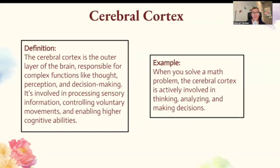Cerebral cortex. The cerebral cortex is the outer layer of the brain, responsible for complex functions like thought, perception, and decision-making. It's involved in processing sensory information, controlling voluntary movements, and enabling higher cognitive abilities. So when you solve a math problem, the cerebral cortex is actively involved in thinking, analyzing, and making decisions.